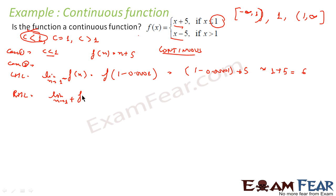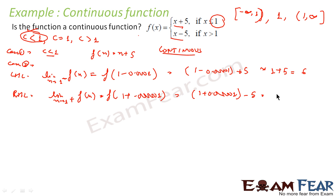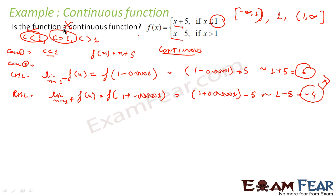For the right hand limit, limit as x tends to 1 plus of f(x), we take a value slightly greater than 1, like 1 + 0.0001. Since this is greater than 1, we use the other piece of the function: x minus 5, giving 1 + 0.0001 - 5, which is almost -4. The left hand limit is 6 and the right hand limit is -4 — they are not equal, so the limit doesn't exist.